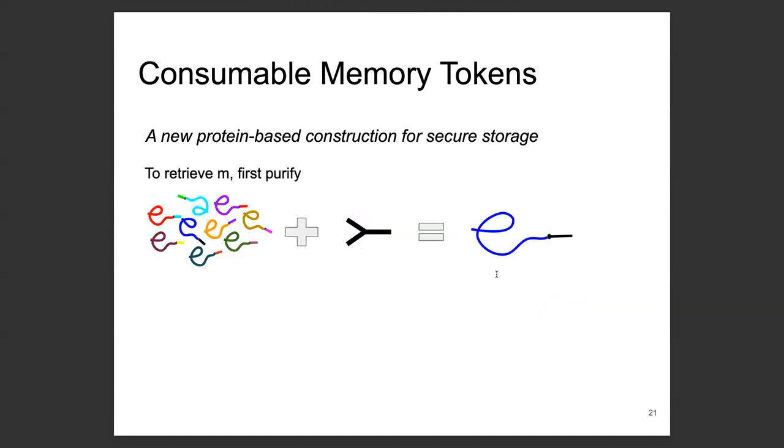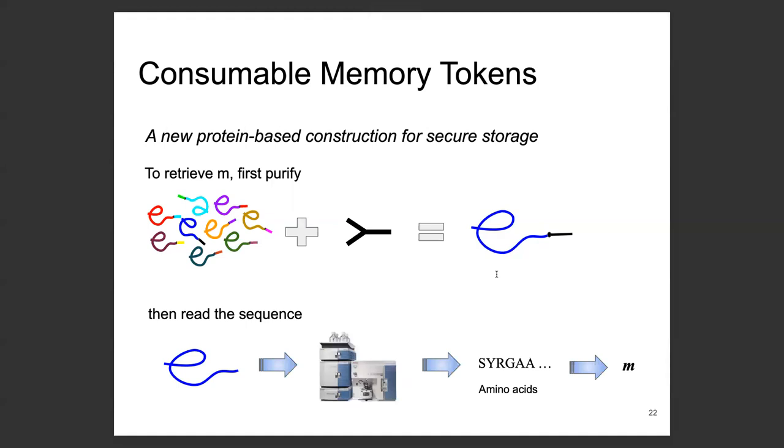Now, to retrieve the message, remember, if you just give the mix to the mass spec machine, it will not be able to identify the secret protein or the secret message. This sample must be purified first. To do that, we apply the matching antibodies, the ones that match the secret header, to the vial to pull down the target protein with high enough purity. Then we cleave the header and then use the mass spec machinery to read the amino acid sequence of this target protein, which will be decoded into the digital message.